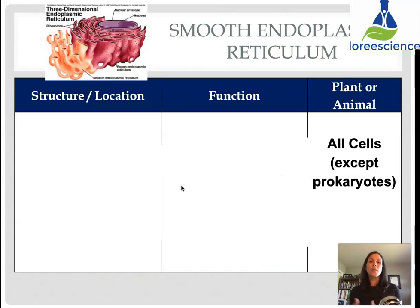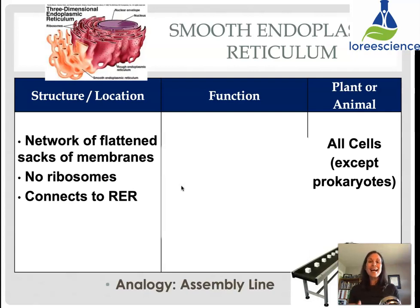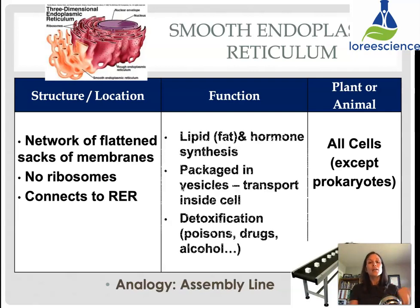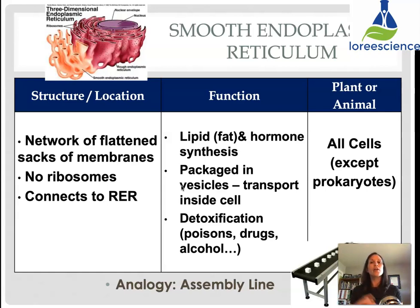The smooth endoplasmic reticulum, or SER, is found attached to the RER. It is also a network of flattened membranes, but it does not have ribosomes — that is the distinguishing structural feature. The smooth ER makes lipids, or fats, as well as hormones. These fats and hormones are packaged in vesicles and transported within the cell. There is also a lot of smooth ER when there is need for detoxification — the smooth ER breaks down poisons, drugs, and alcohols that could do damage to cells. All cells except prokaryotes have a smooth ER. In terms of analogy, it is also like an assembly line.